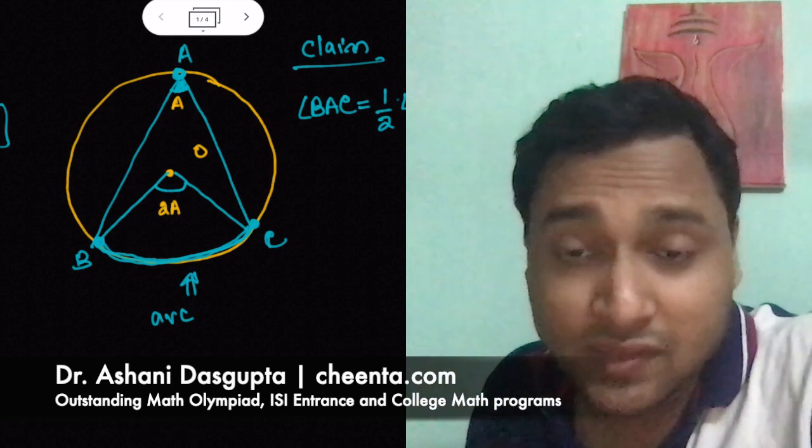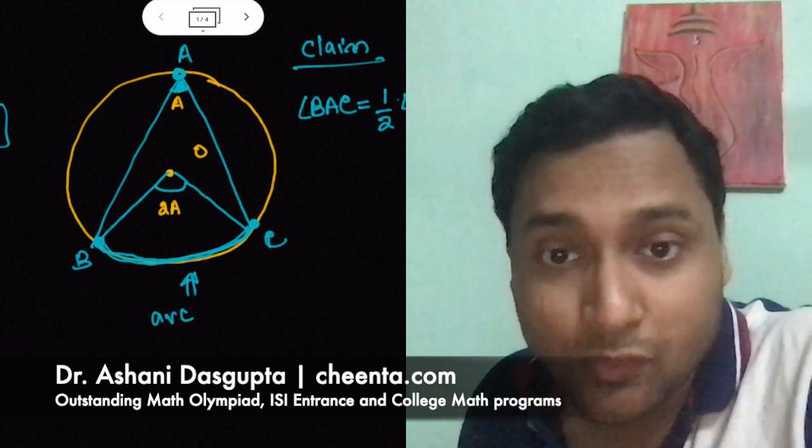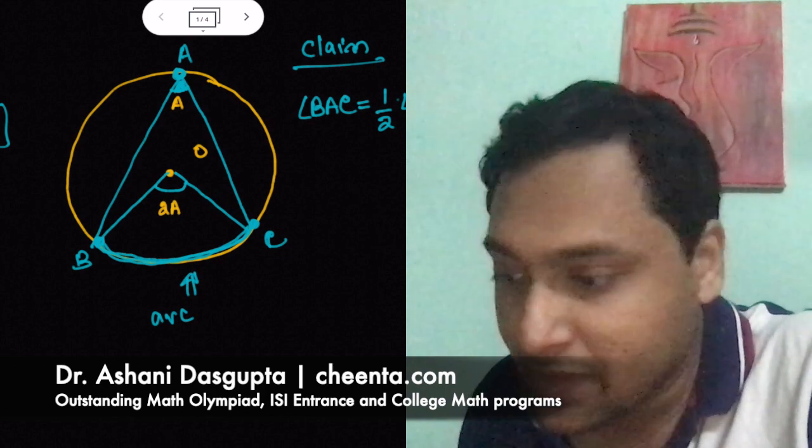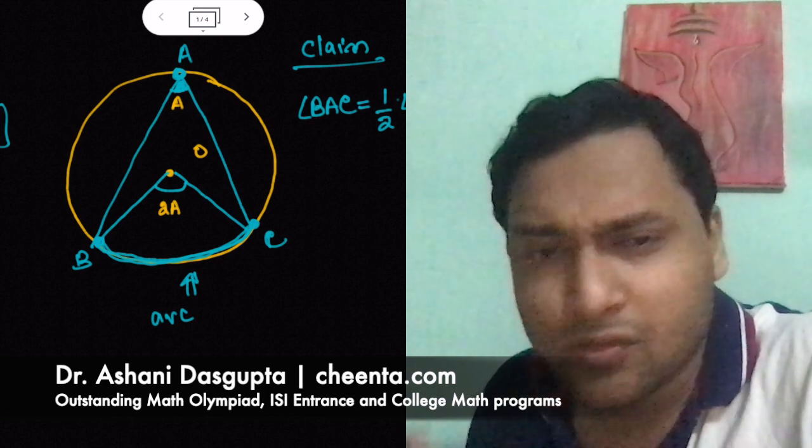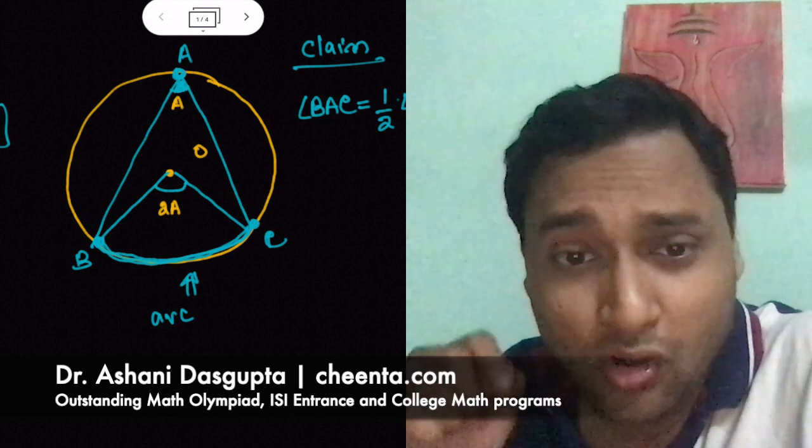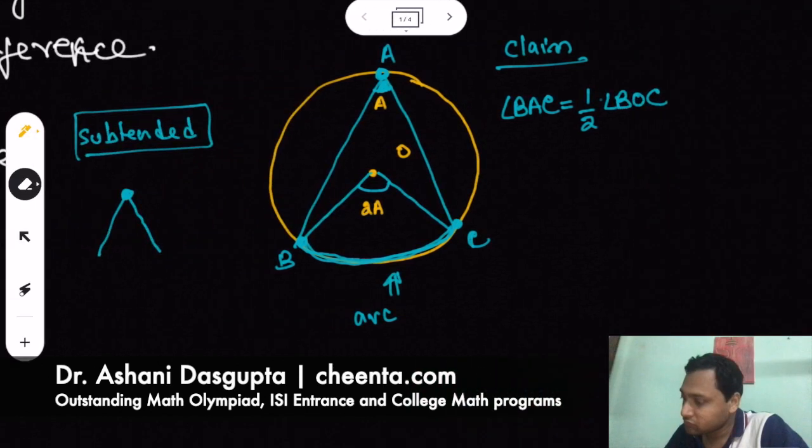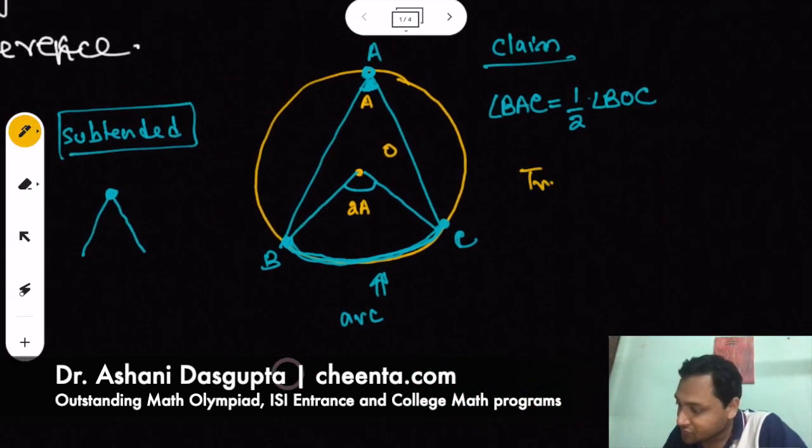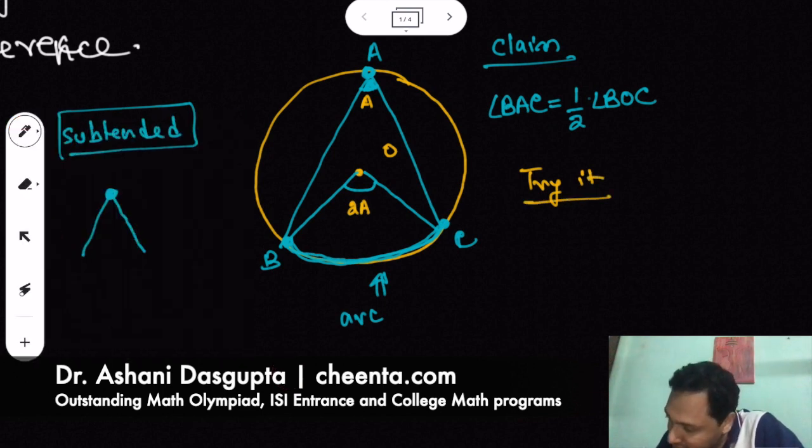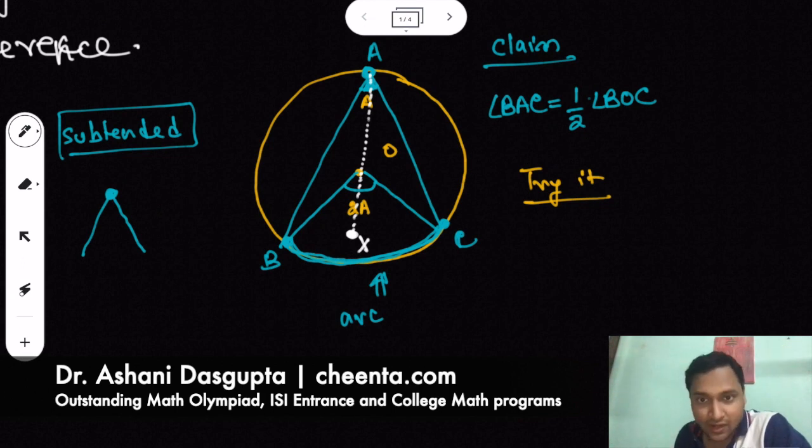There is a proof of this and we discuss it in the geometry module of the Math Olympiad program and ISI CMI entrance program at Cheenta. If you know how to prove this, you can also put a comment in the description with your own proof and I can check if that's right. So maybe if you don't know how to prove this, then try it. I'll give you a hint. There is a construction: you just join AO and extend it to some point X. That becomes very useful. This is one way to do this. Of course, there are other ways.